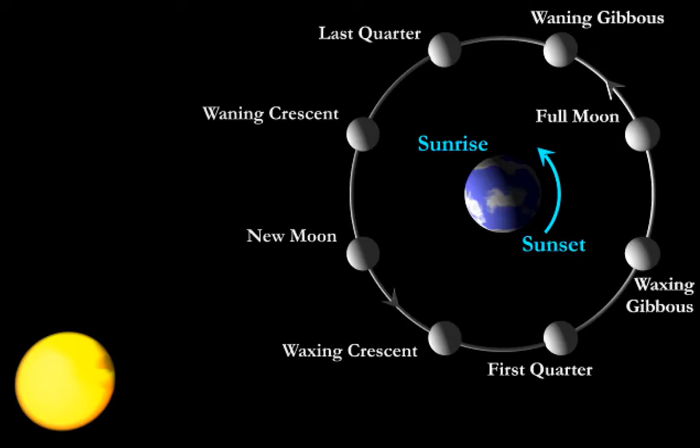Here we can see the same with a bit more technical terms. This is called new moon, and then some other names. And full moon is around here. Actually, if you were on the moon, you would see that the Earth has more or less the same appearance — it will also be a half Earth, and full Earth, and first quarter, and whatever the names are.